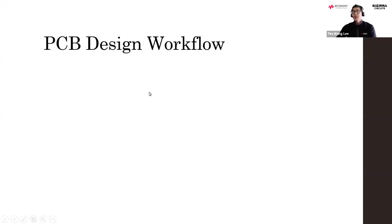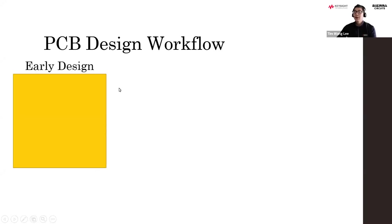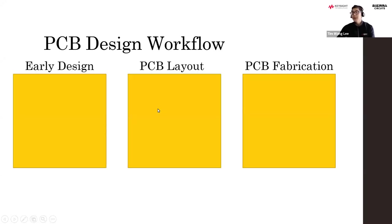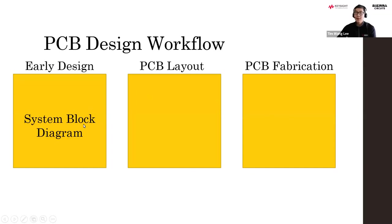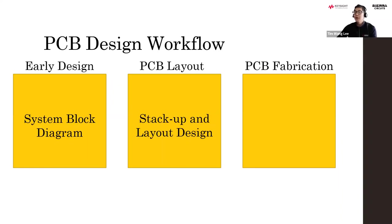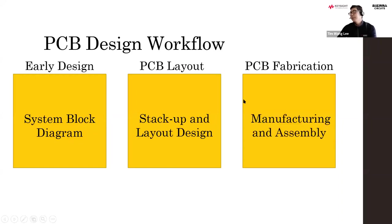Here is a workflow in a simplified form. First, you have the early design phase. Then you have the PCB layout phase, followed by the PCB fabrication phase. In the first part, you have system block diagrams, schematics, things like that. Going into the PCB layout in the middle, you start specifying your stack-up and your layout design. Finally, you go to PCB fabrication where manufacturing and assembly are done.